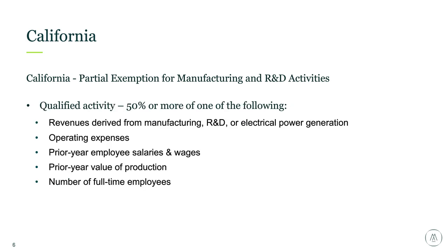The key for qualified activity is that you have to spend 50% or more of your time engaged in a qualified activity. California gives several options for evaluating whether you meet that 50% test: you can look at revenue, operating expenses, employee salaries and wages, value of production, or the number of full-time employees. As best practice, we recommend you document your methodology for arriving at this 50% — whether it's an email or memo to the file — and maintain that documentation contemporaneously with taking the exemption so that if you're ever audited, you have something to support your position.